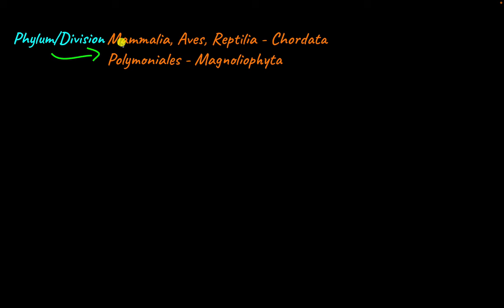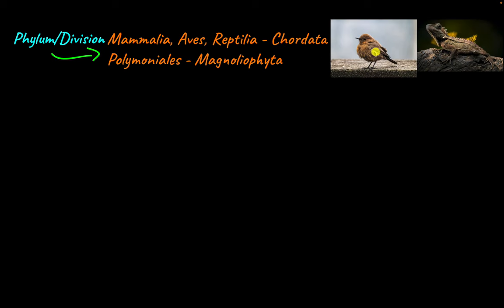The next taxonomic category is phylum for animals and division for plants. All closely related animal classes are classified into the same phylum. For example, Mammalia, Aves which includes birds, and Reptilia which includes reptiles are all classified under the phylum Chordata — meaning they are all chordates and share characteristics such as having a notochord or a post-anal tail. For plants, all classes under Polymonials are classified under the division Magnoliophyta.